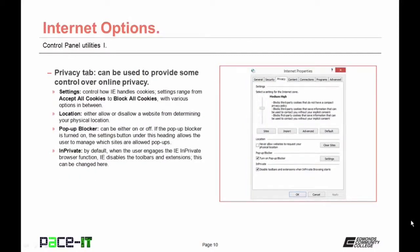The Privacy tab allows some control over online privacy. The Settings section controls how Internet Explorer handles cookies, ranging from accept all to block all. The Location section either allows or disallows a website from determining your physical location through your IP address. The pop-up blocker can be on or off — if on, the settings allow you to manage which sites are allowed to use pop-ups. In Private mode by default disables toolbars and extensions — this can be changed here.